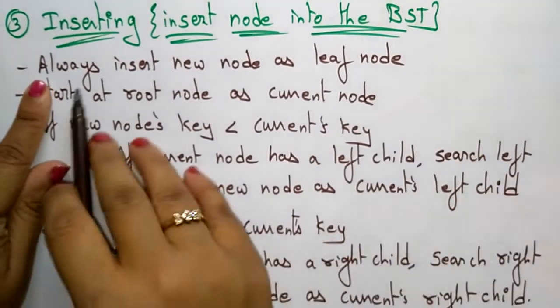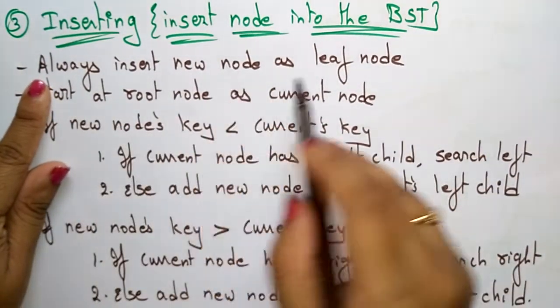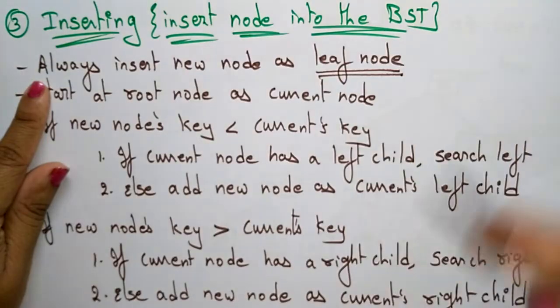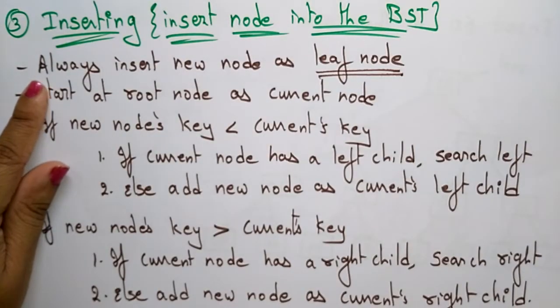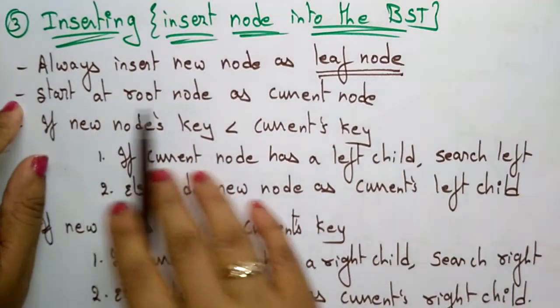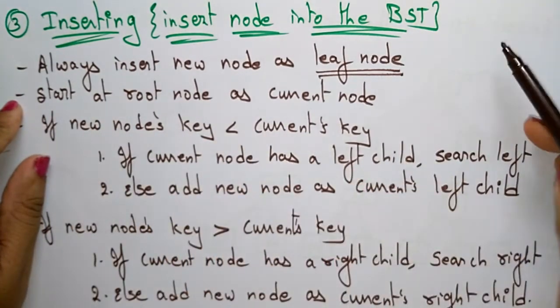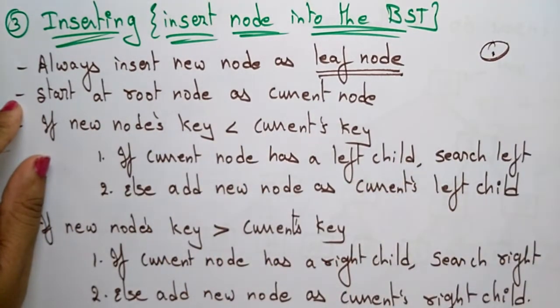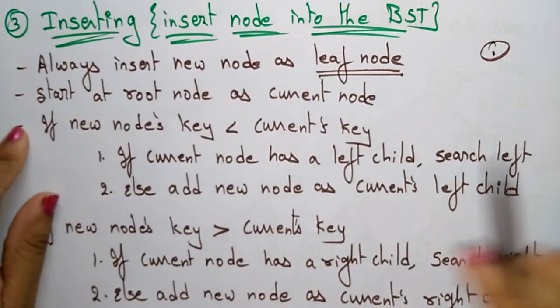First, always insert a new node as a leaf node. So whatever node you want to insert, that node has to be inserted as a leaf node. Second, start at the root node as the current node — whatever the process, you have to start at the root node.